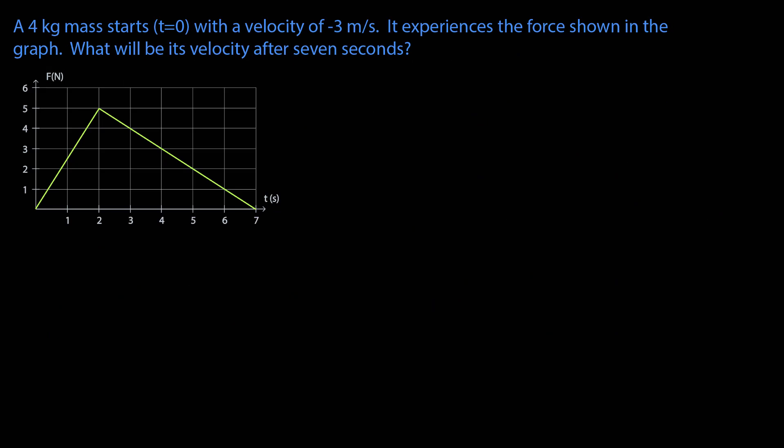Our final problem has a 4 kilogram mass starts at t equals 0 with a velocity of negative 3 meters per second, a speed of 3 in the negative x direction. It experiences the force shown in the graph. What will be its velocity after 7 seconds? That looks like the entire time shown in the graph.